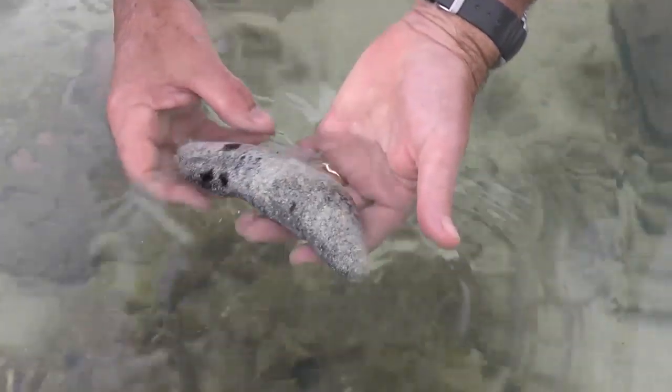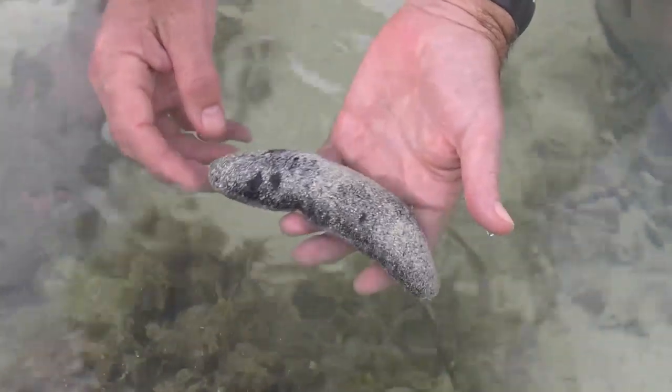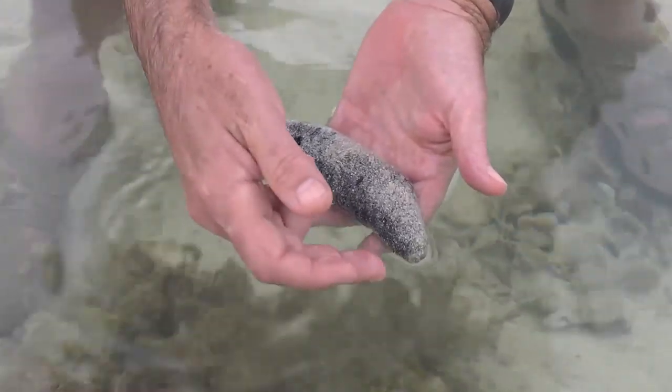Some echinoderms such as sea cucumbers play important roles as detrital feeders. Others such as crinoids are filter feeders collecting particles out of the water column using their tube feet.